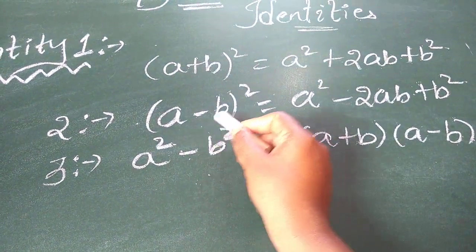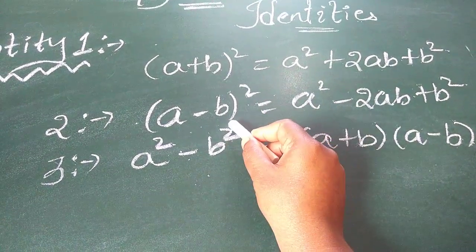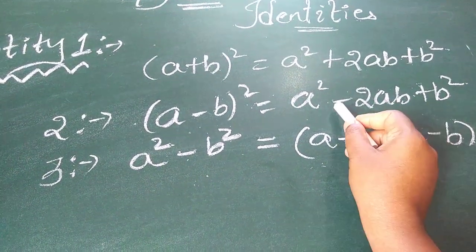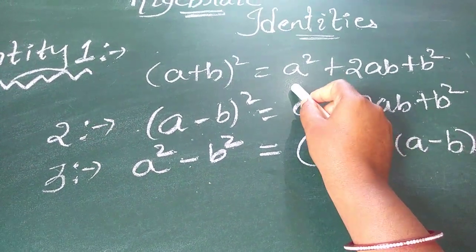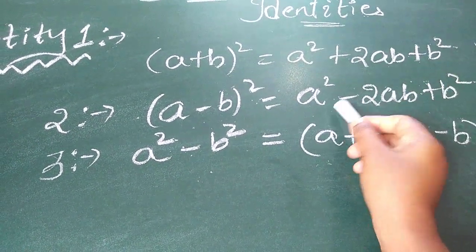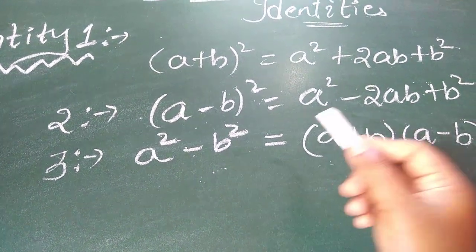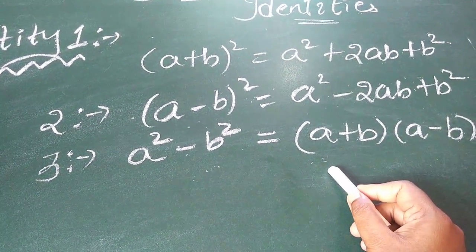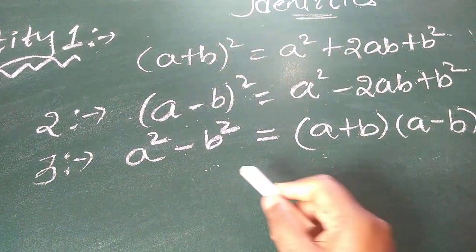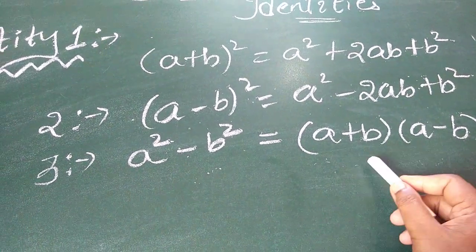When you see a minus b whole square, you should read this as whole square. When you read a minus b whole square, it is a square plus b square minus 2ab. In both cases, a square plus b square only is there, children. Don't get confused. When there is a question a square minus b square, then you have to apply this identity as a plus b into a minus b. I think in your first chapter, real numbers also, you have applied this for rationalizing the denominator.